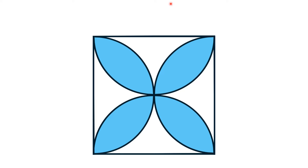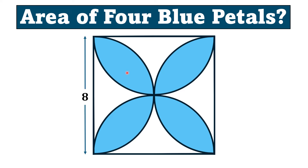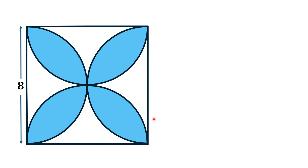In this problem, we have a square in which four petals are shaded blue, and we have to find the area of these four petals. These four petals are formed by four identical semicircles, each semicircle having a diameter equal to the side of the square. The side length of the square is eight units.